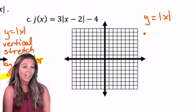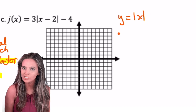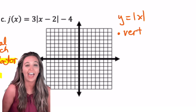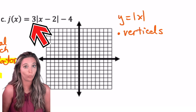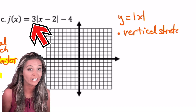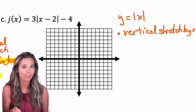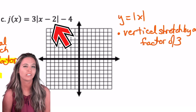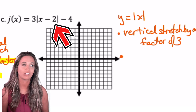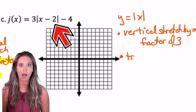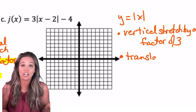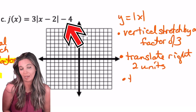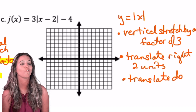Looking at j of x, I'm going to have three transformations. We have multiplied by three on the outside of the absolute value bars — that's a vertical stretch by a factor of three. Factor means multiplied. Inside my absolute value bars I have minus two; inside, opposite — so that's a translation right two units. Outside, minus four, so translated down four.